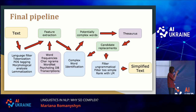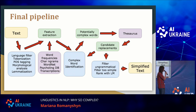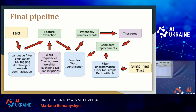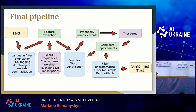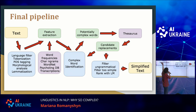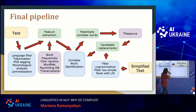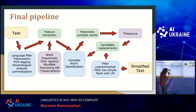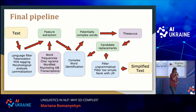After using all of these techniques, we can find the best simplified words for our lexical simplification system. The final pipeline looks a bit more complicated than the one we started with. We have text that goes through many levels of NLP processing. We do feature extraction — we now have many more features. We also have a repository of word frequencies, character n-grams, WordNet, psycholinguistic databases, and a dictionary of synonyms — all going into feature extraction. Then the complex word identification module finds potentially complex words. We find synonyms in the thesaurus, do candidate replacements, filter ungrammatical or too-simple solutions, rank them with a language model, and get a simplified text.